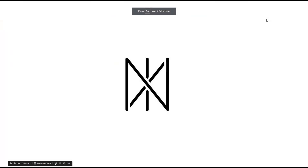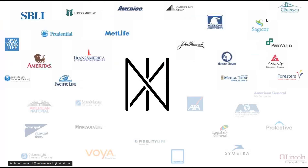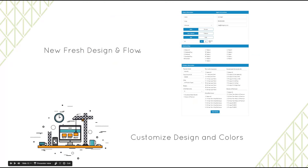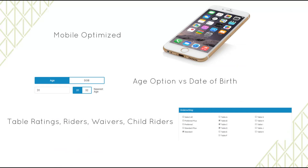Let me recap some of the new features. First, there's the fresh new design and flow — that's a big thing. You can customize the design and colors; before there were only very minor customizations. We're also going to have different flows, and you can customize bars with colors to fit the look and feel of your website. It's going to be mobile optimized — from what I understand, there aren't very many quoters out there that are actually mobile optimized, and ours will be one of the few. We added the age option versus date of birth, table ratings, riders, waivers, and child riders.